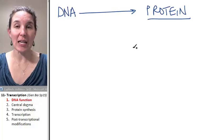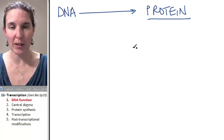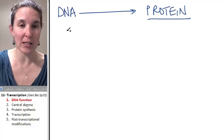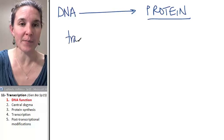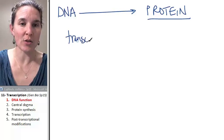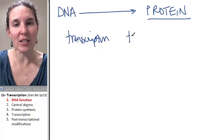There's two stages of this process and we're going to deal with them separately. The first stage of DNA to protein is called transcription, and the second stage is translation.